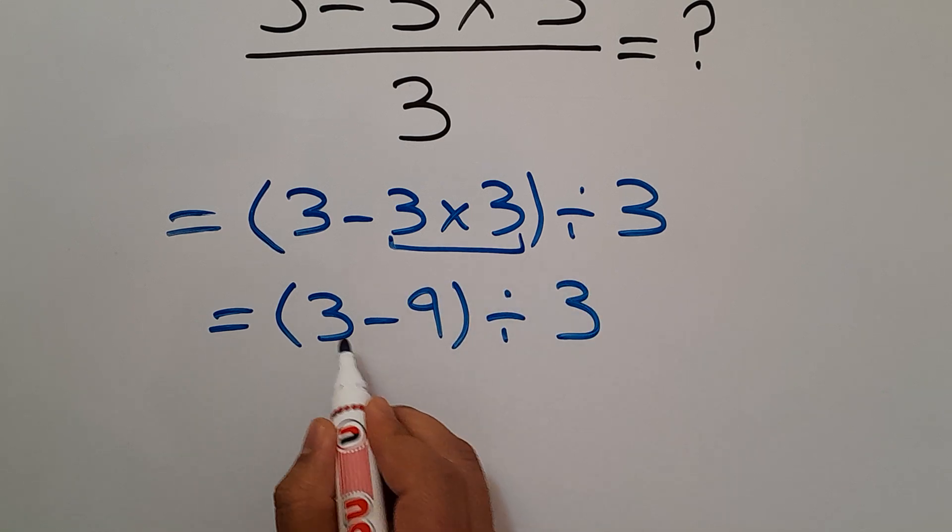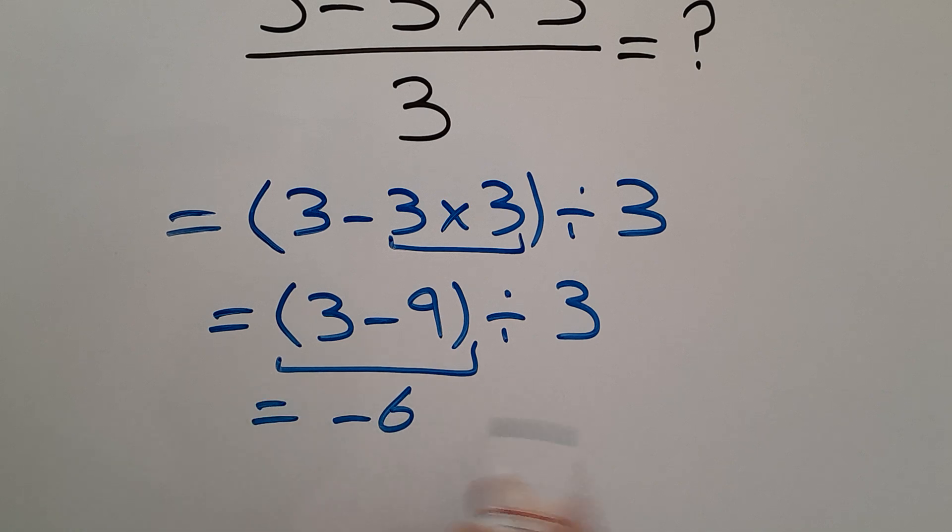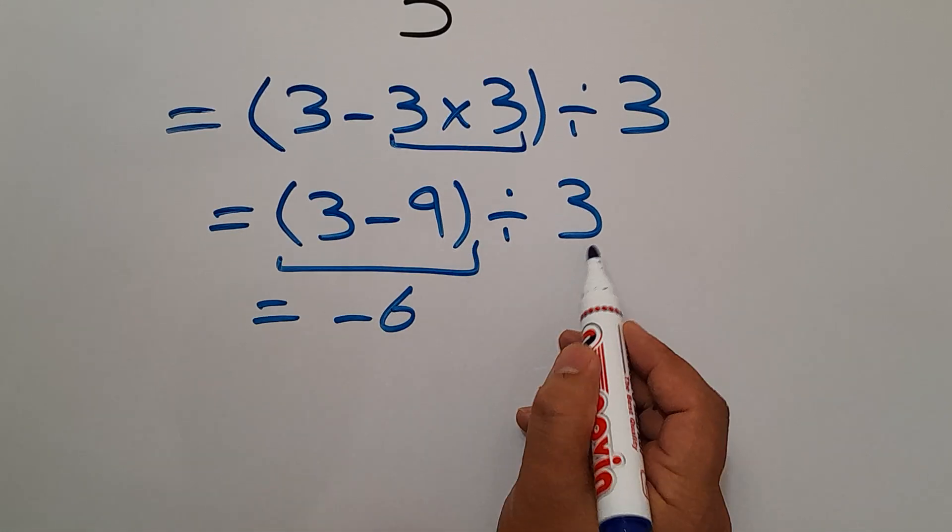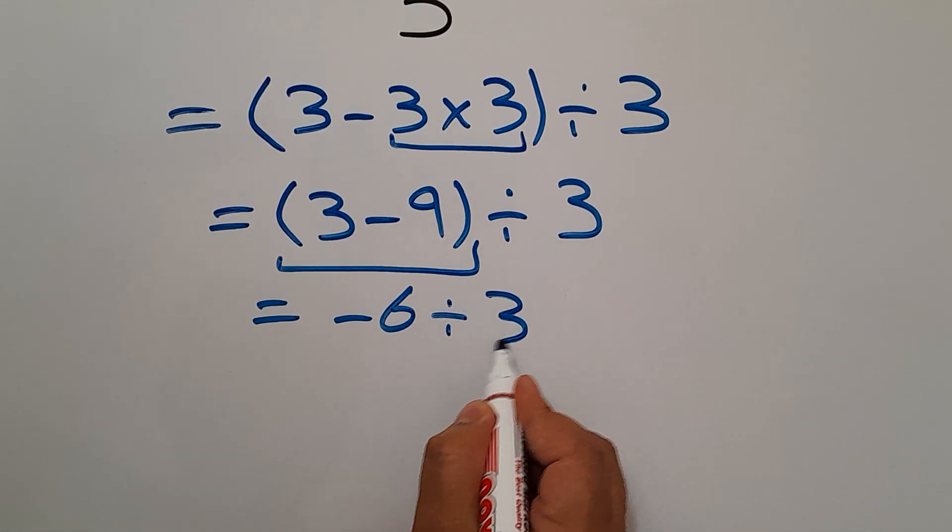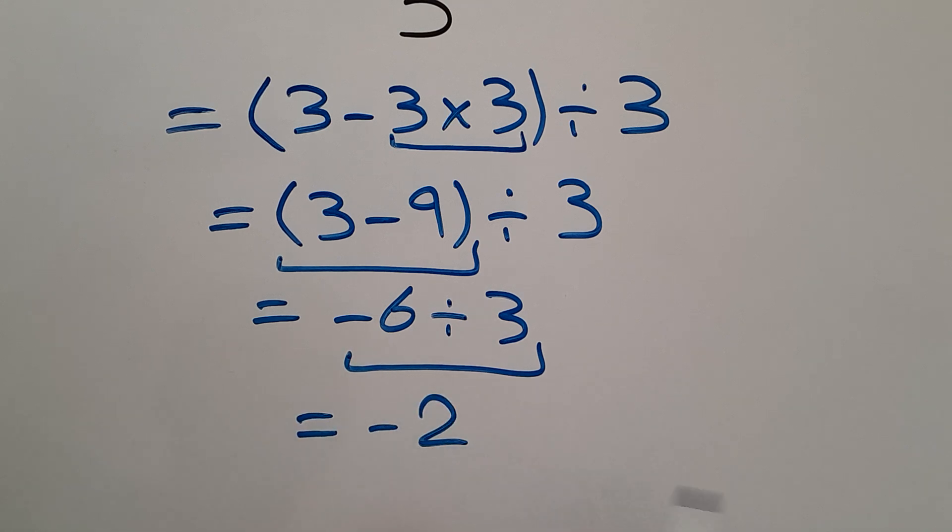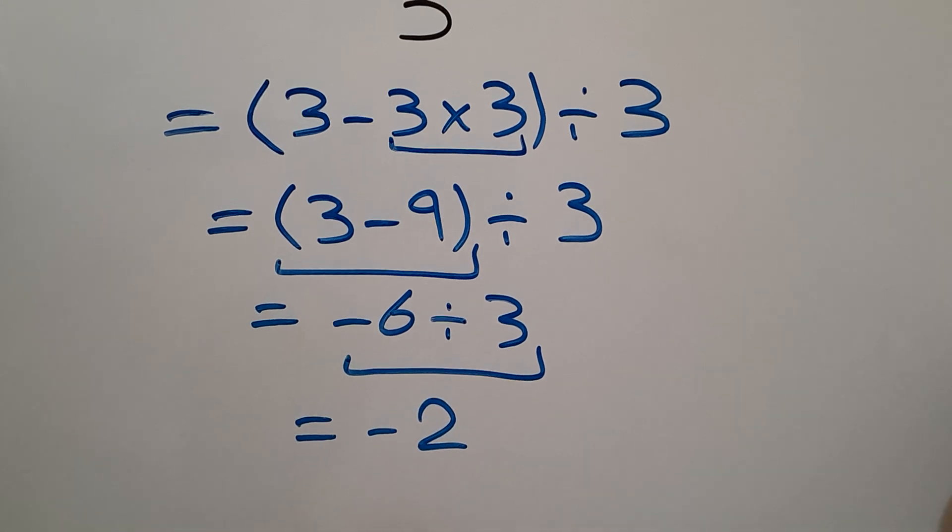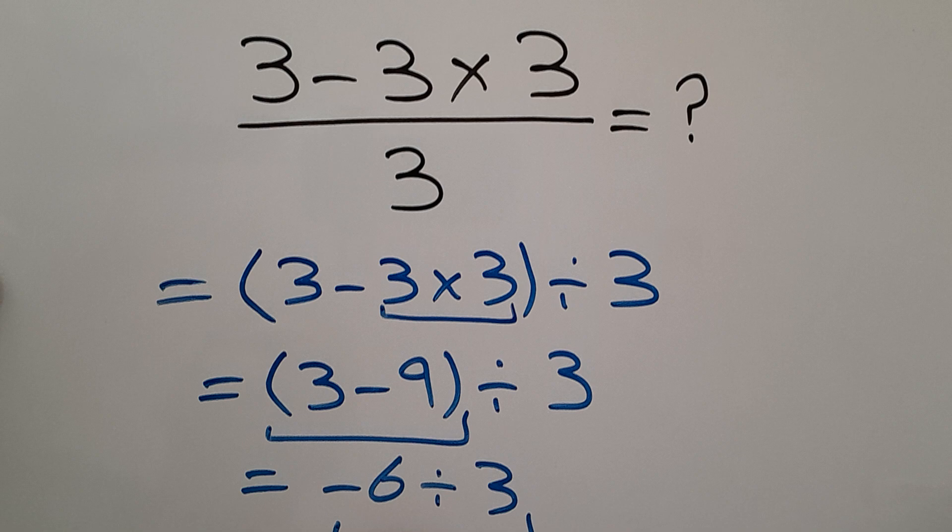Negative 6 divided by 3 equals negative 2. So our final answer to this problem is just negative 2.